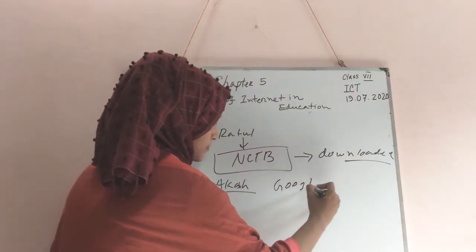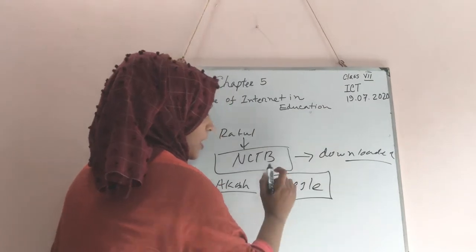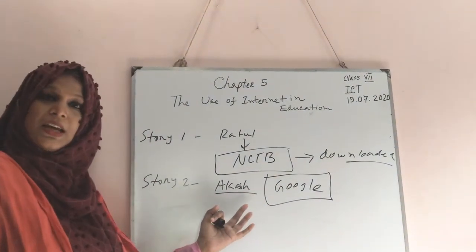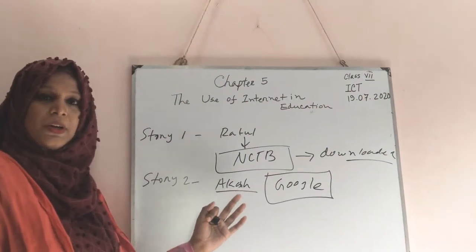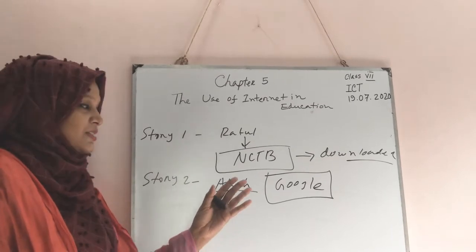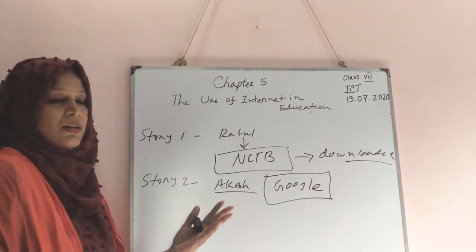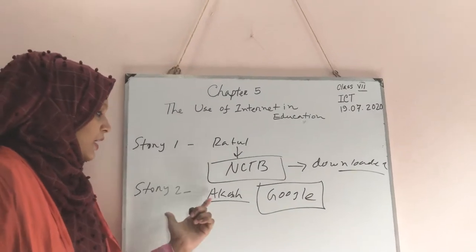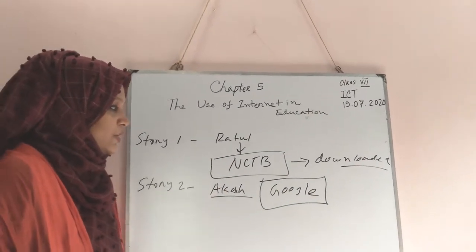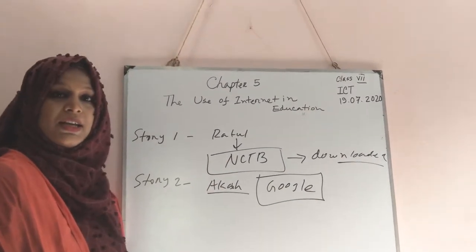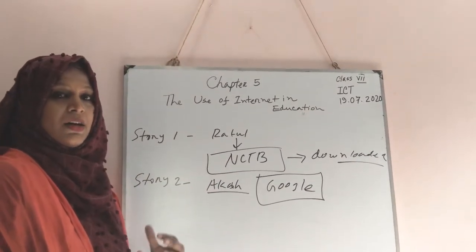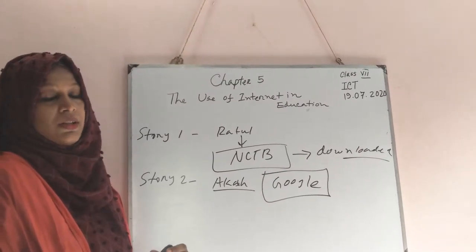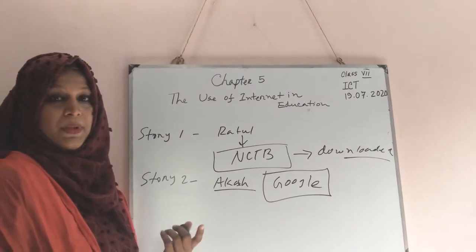Google.com. Google is a search engine. You can search anything — any topic or any question you can ask on this website. It suggests some answers. And Akash went to this site and learned why Pluto is no longer a planet.